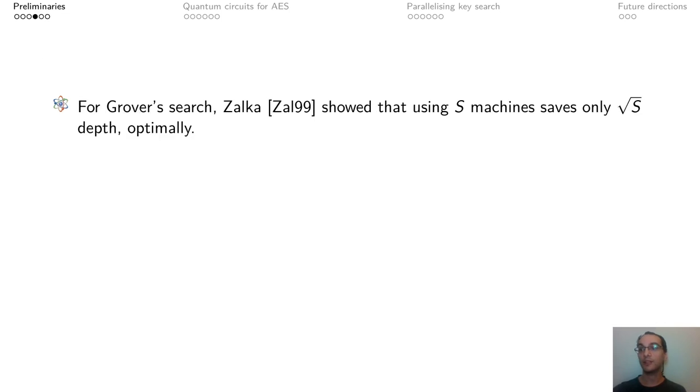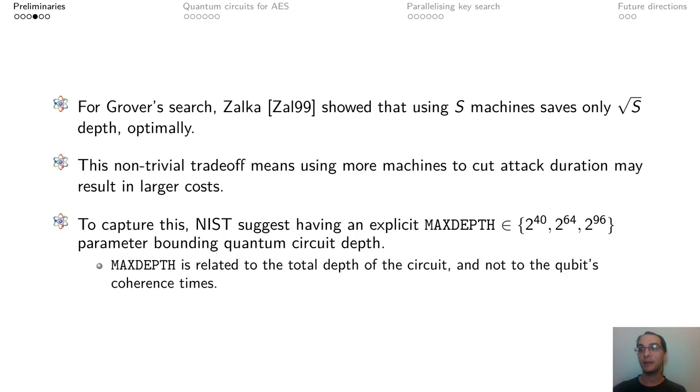In the case of Grover's search, Zalka showed that optimally, if we use S machines to parallelize the algorithm, at most we can divide the total depth by square root of S. This differs from exhaustive classical search where the depth is divided by S. This means that trying to run Grover's in less time increases its cost. To halve the time, one requires four times many machines, and the cost doubles.